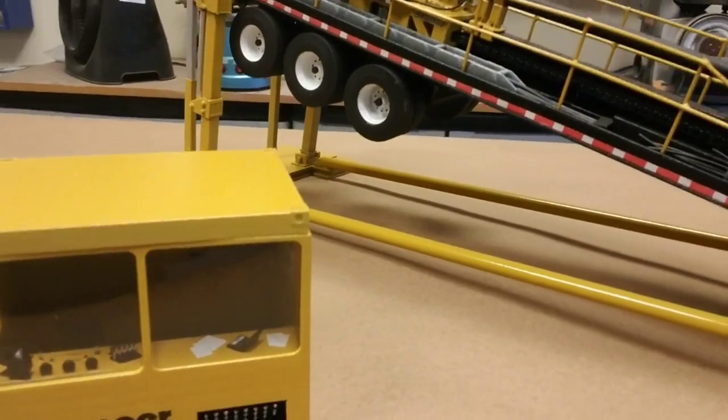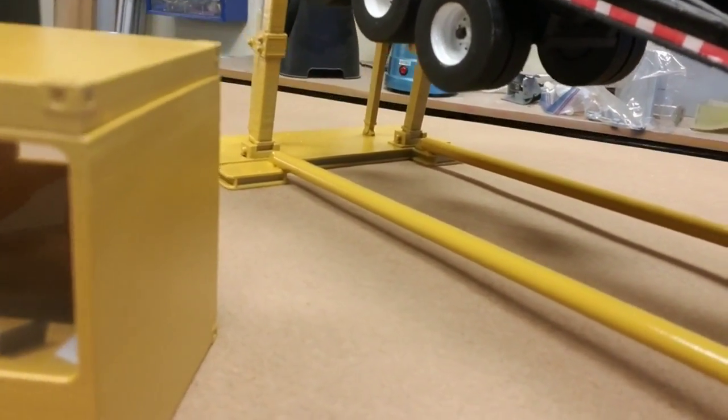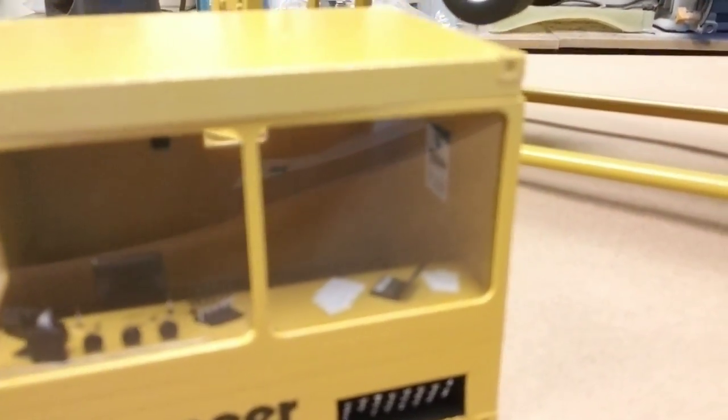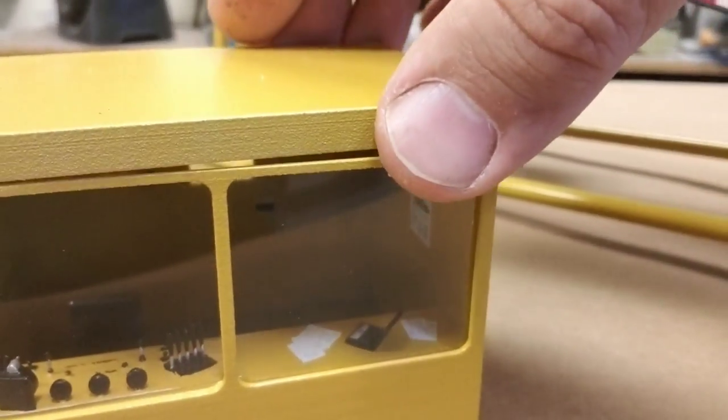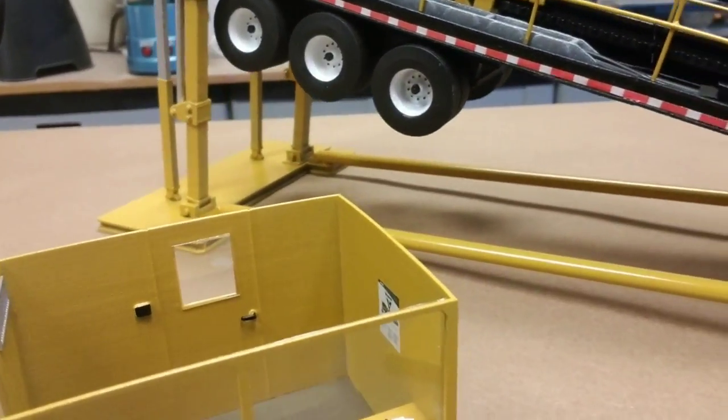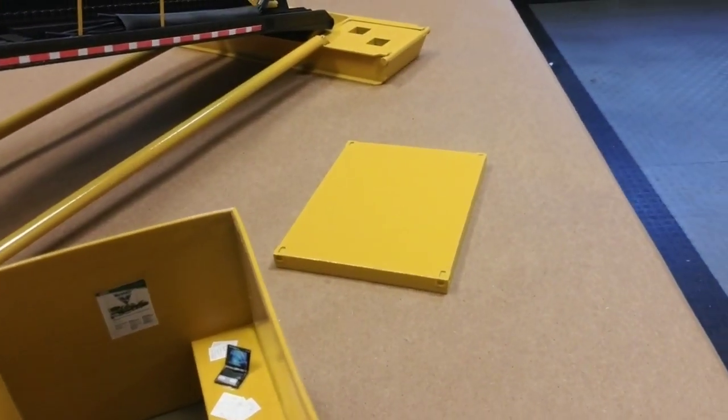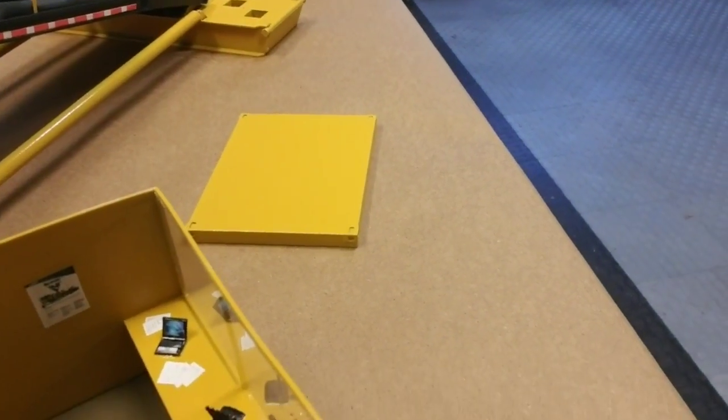It's a DC10 driller's cabin. You can see we got a lot of detail in there. All of the controls. I've got some paper. I've even got a little laptop in there. I'll open this up and take a look. Got a poster of the Vermeer D1000 on the back wall there.